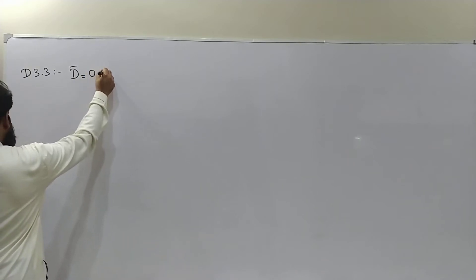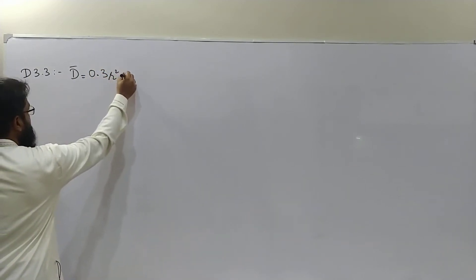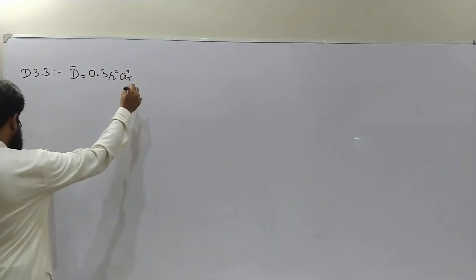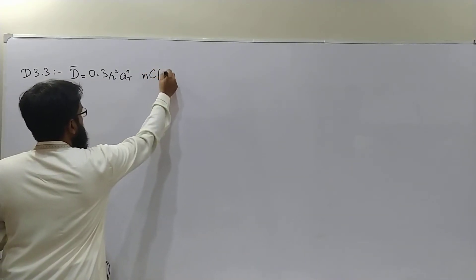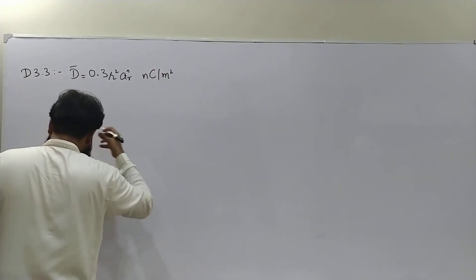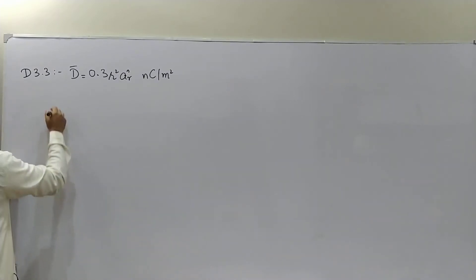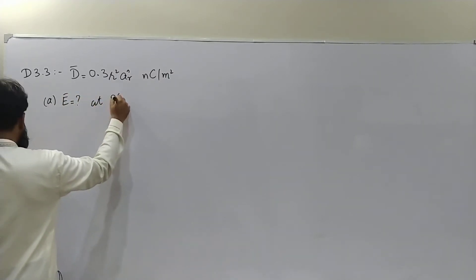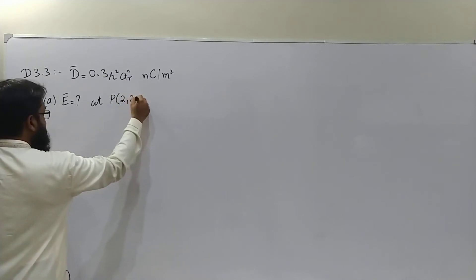Drill 3.3 gives us flux density which is 0.3 R square ar nanocoulombs per meter square in free space.